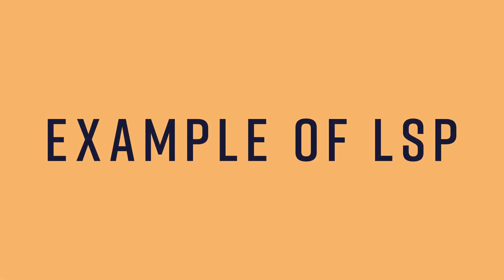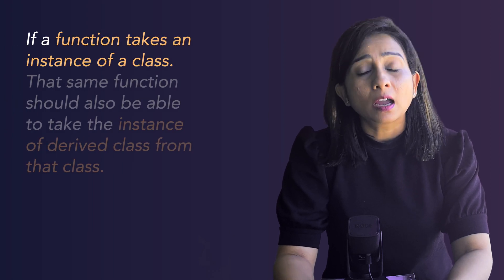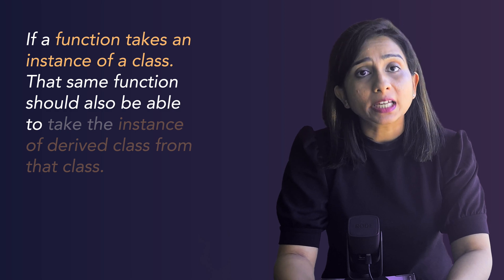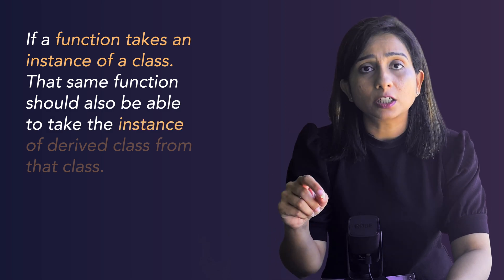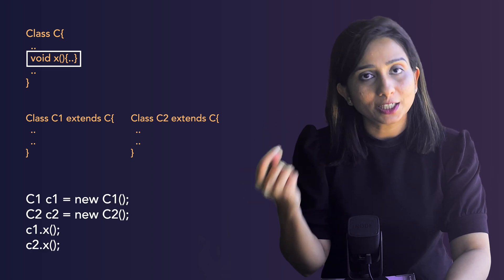Let's take a real world example first. Let me try to define or describe the principle in simple words first. If a function takes an instance of a class, that same function should also be able to take the instance of derived class from that class. For example, there is a function X, it takes instance of a class C. Now class C has derived classes C1 and C2. This function X should also be able to take the derived class instances, instances of C1 and C2 and the functionality of this function X should not break.